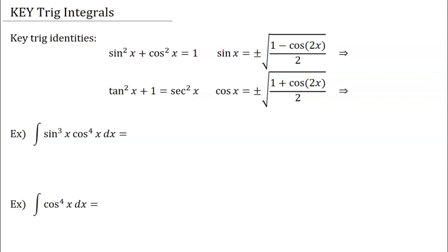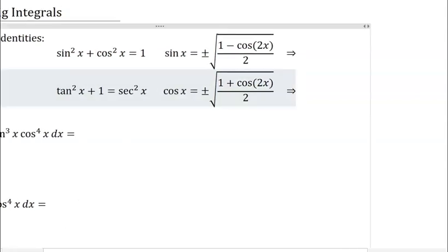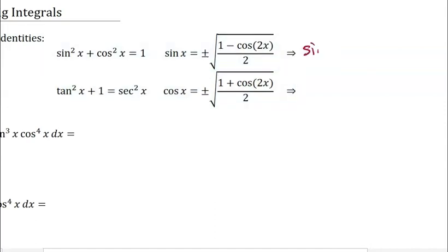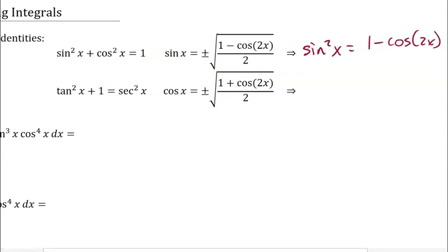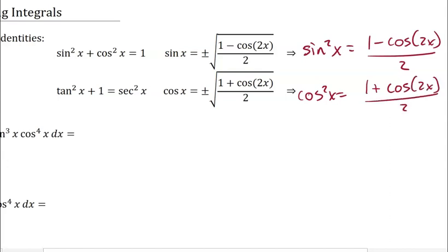These are half-angle identities. If we are changing from sine of x to something in terms of 2x, the form of this that you are going to see with our substitution for integrals is: if we square both sides of this equation, we get that sine squared of x is equal to — so the radical and the plus-minus is gone — 1 minus cosine of 2x. And then cosine squared of x is 1 plus cosine of 2x, all over 2.